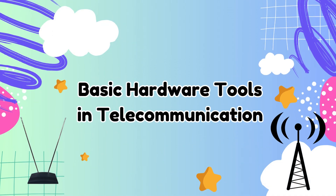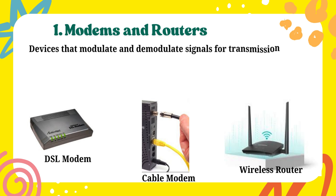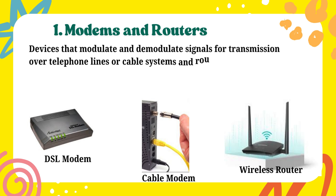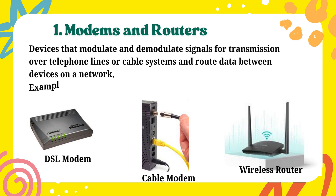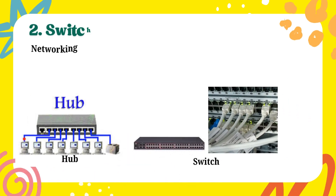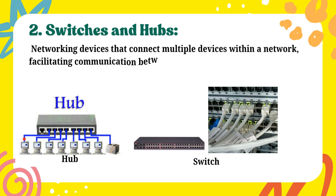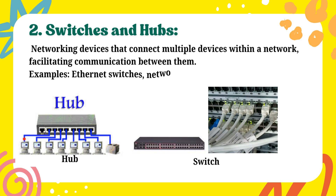Basic Hardware Tools in Telecommunication: 1. Modems and Routers — devices that modulate and demodulate signals for transmission over telephone lines or cable systems and route data between devices on a network. Examples: DSL modems, cable modems, wireless routers. 2. Switches and Hubs — networking devices that connect multiple devices within a network, facilitating communication between them. Examples: Ethernet switches, network hubs.